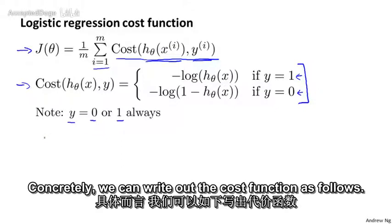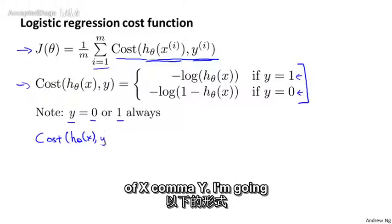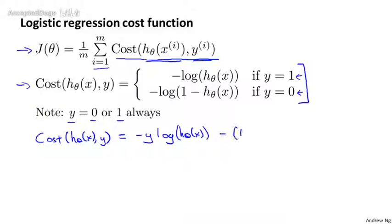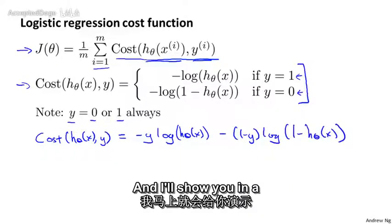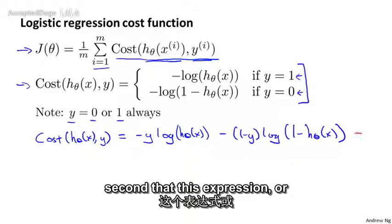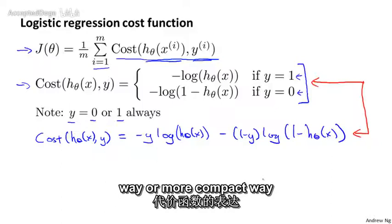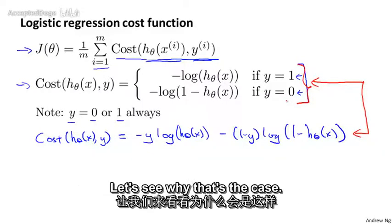Concretely, we can write out the cost function as follows. We'll say that cost of h(x), y is minus y times log h(x) minus (1 - y) times log (1 - h(x)). And I'll show you in a second that this expression or this equation is an equivalent way or more compact way of writing out this definition of the cost function that we have up here. Let's see why that's the case.